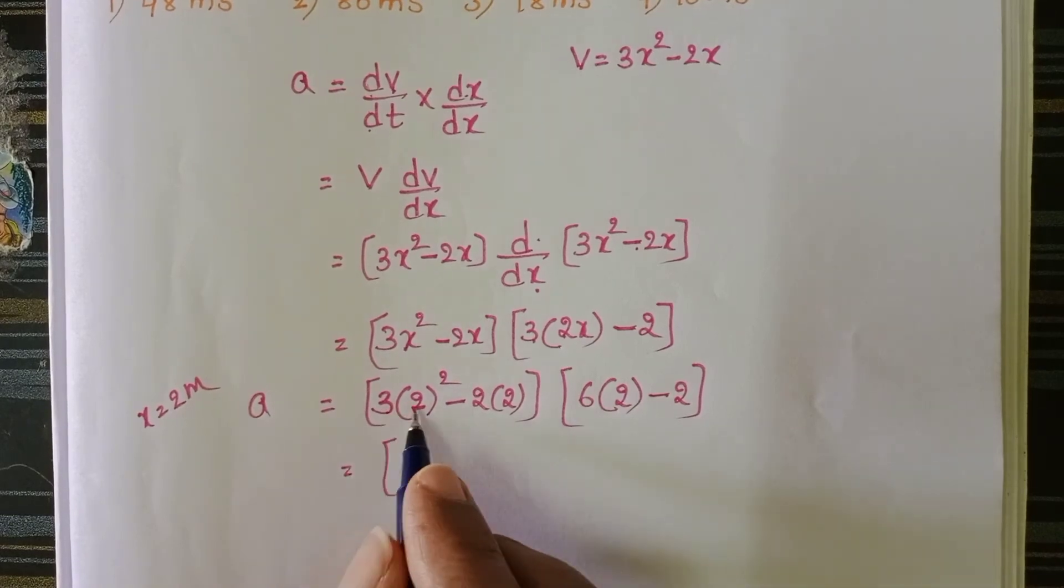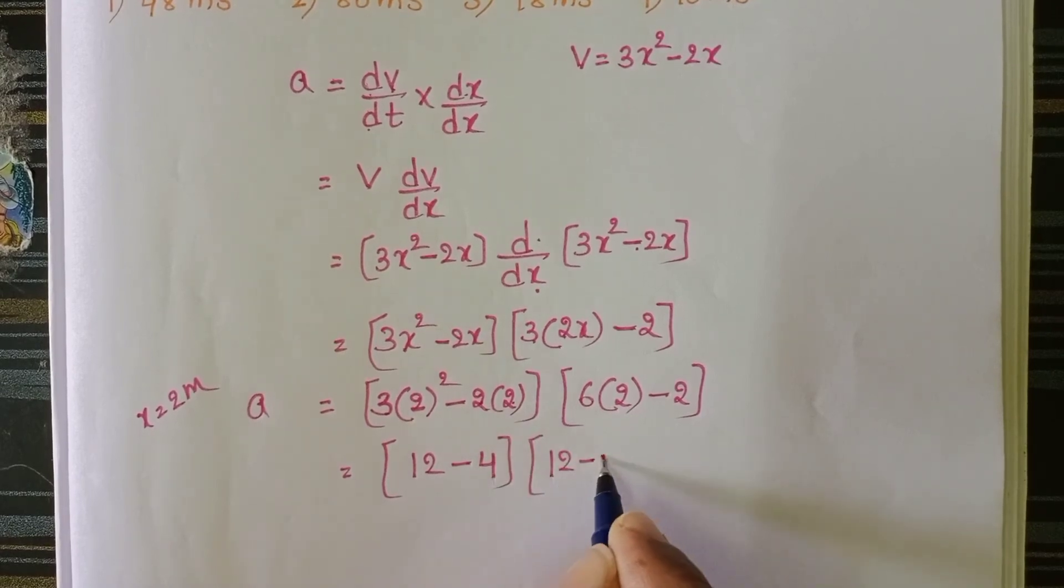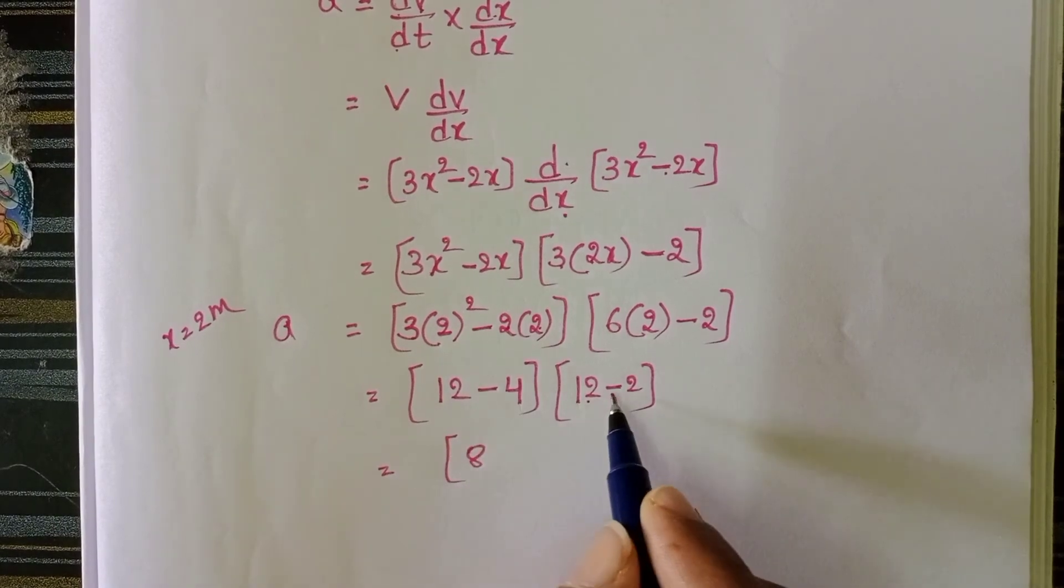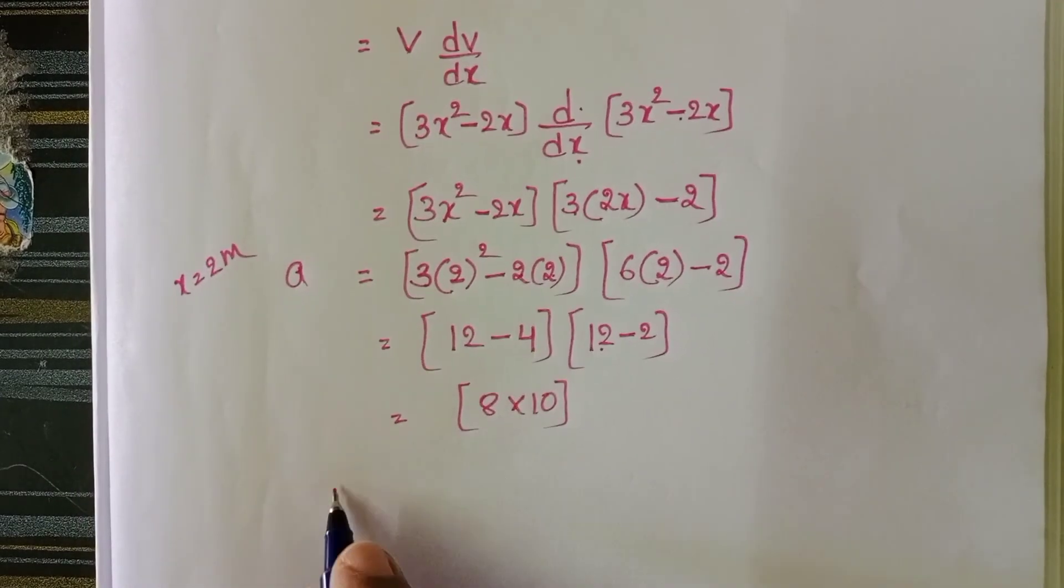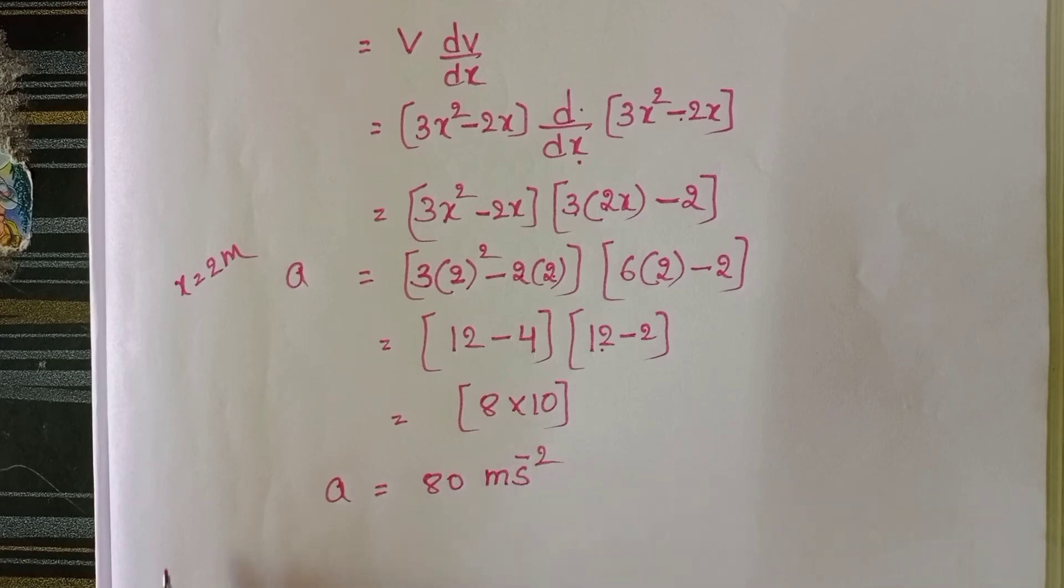Now 3 into 4, 12 minus 2 into 2 is 4. 12 minus 4 is 8. 12 minus 2 is 10. So 8 into 10. Then acceleration equals 80 meter per second square.